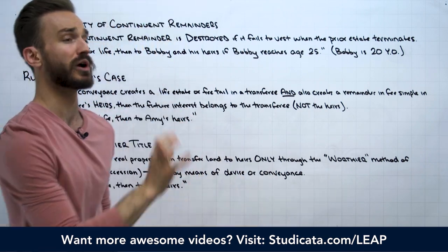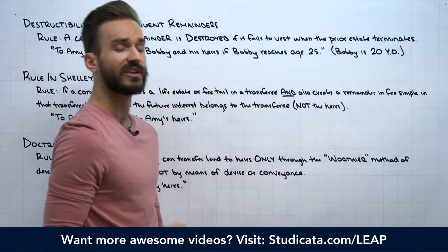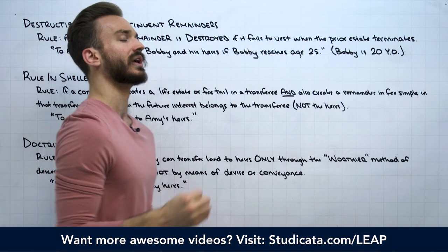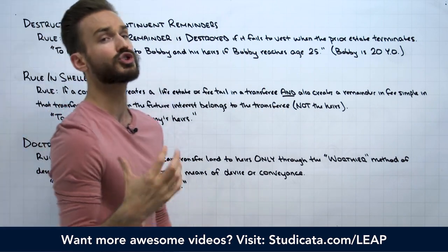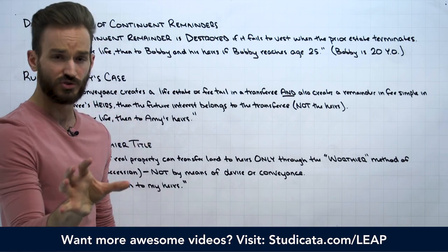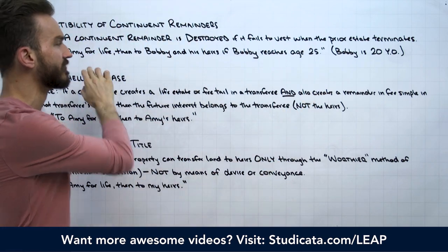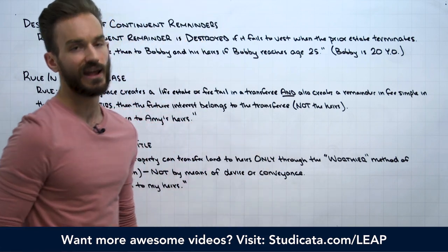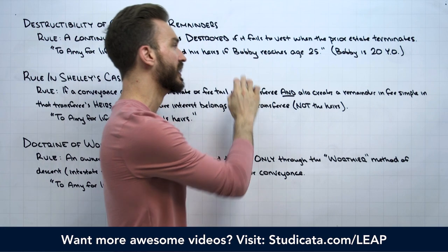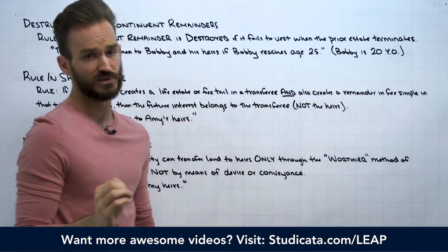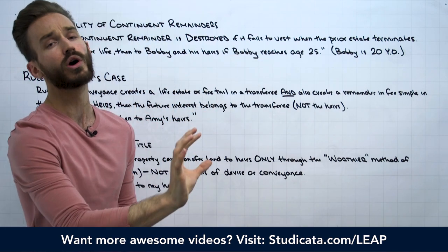Working through our decision tree: does Bobby have a present estate or a future interest? Because Bobby's interest is non-possessory — he needs a future event to happen to gain a possessory interest in Greenacre — Bobby holds a future interest. Is Bobby the transferor or a transferee? Bobby's receiving Greenacre, so he's a transferee, meaning his future interest is either an executory interest or a remainder. Because it immediately follows a life estate, it's a remainder. Is it contingent or vested? Because we have a condition precedent — Bobby must reach age 25 — Bobby holds a contingent remainder.